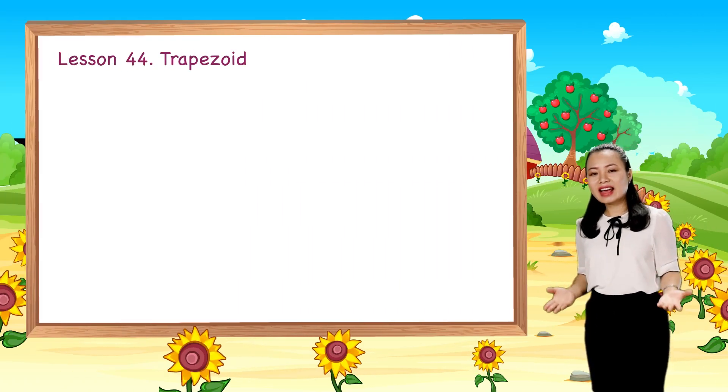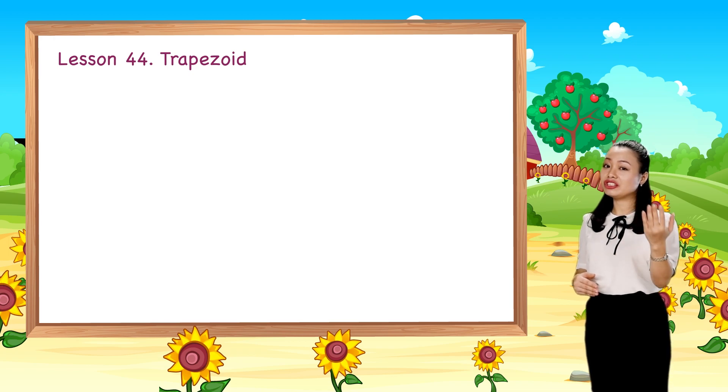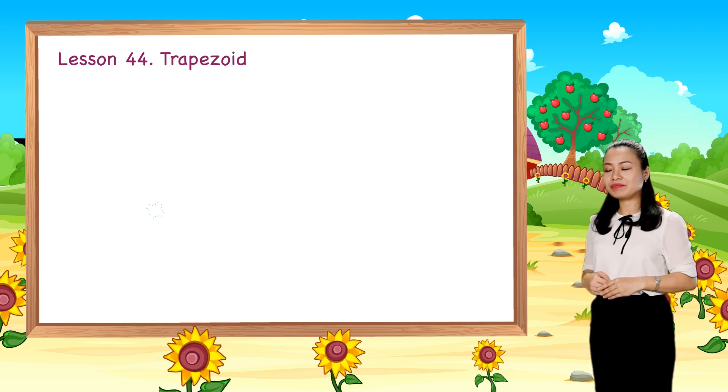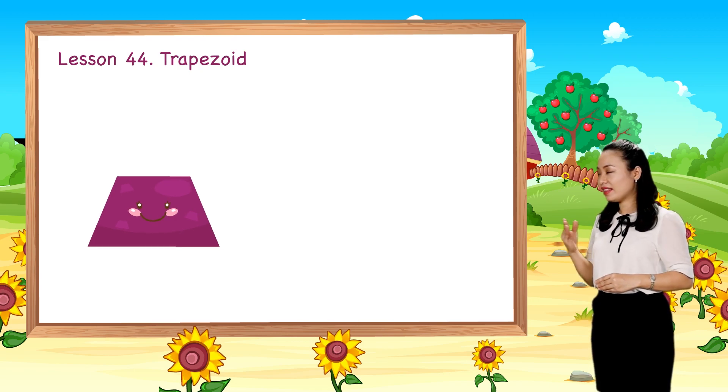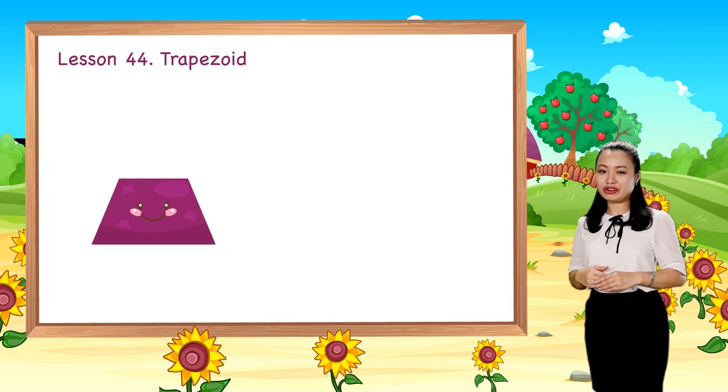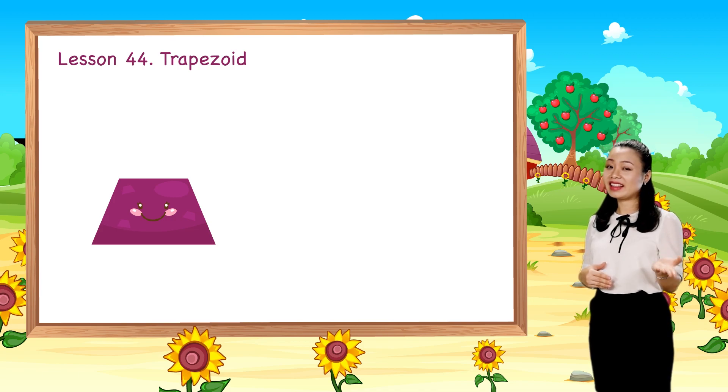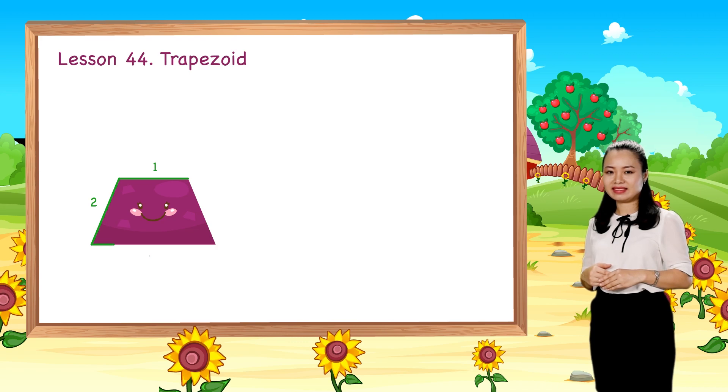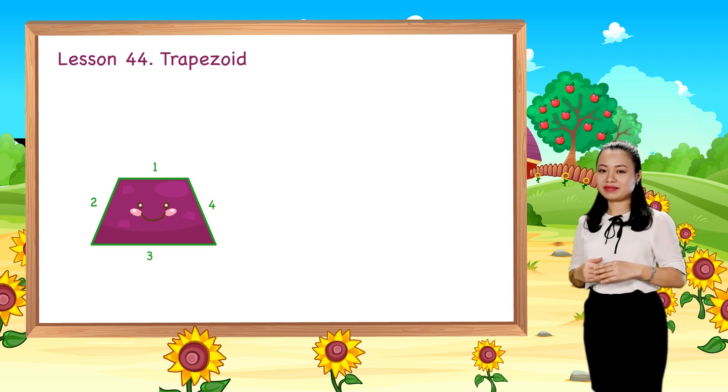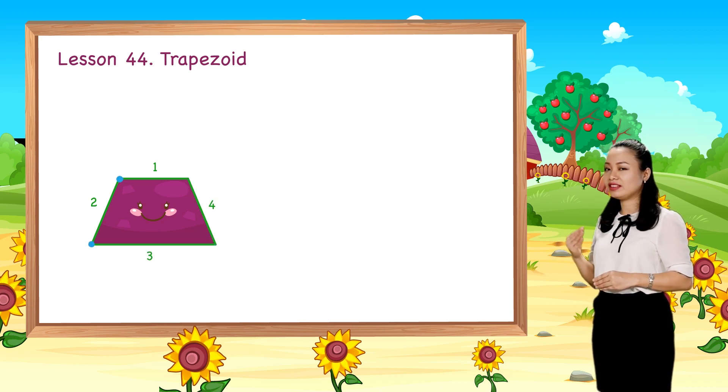Now let me introduce you to trapezoids. This is a trapezoid. It has four straight sides and four corners.